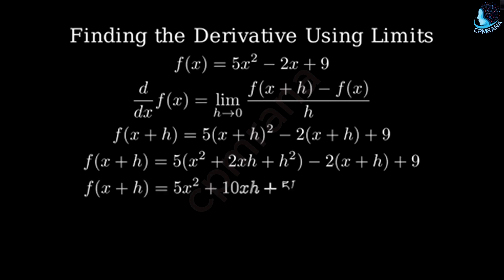Multiply this by 5 and distribute the negative 2 and we get 5x squared plus 10xh plus 5h squared minus 2x minus 2h plus 9.